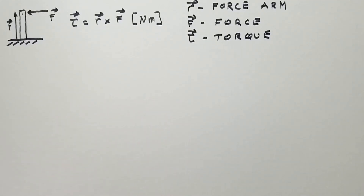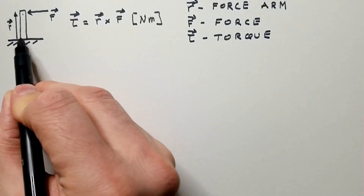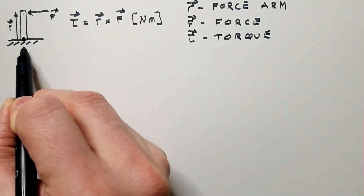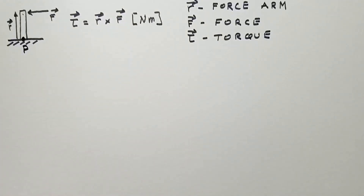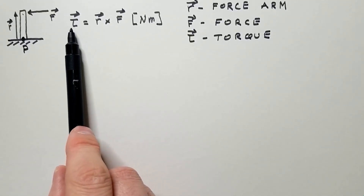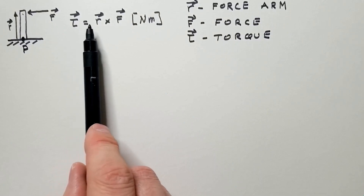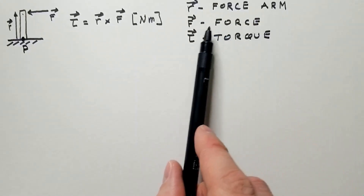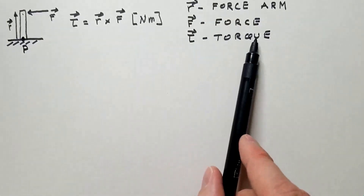This building is anchored at the surface at a point — let's call it P — which is called the pivot point, or the point of rotation around which we want to calculate the torque. In this situation, torque, which we denote with the Greek letter tau, is the cross product between R and F, where R is the arm of the force, F is the force, and tau is torque.